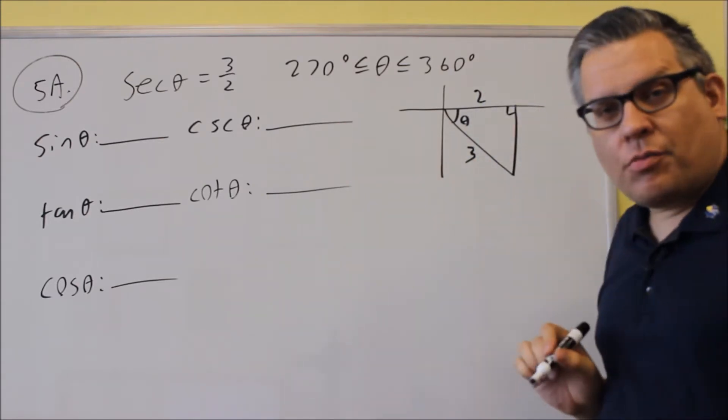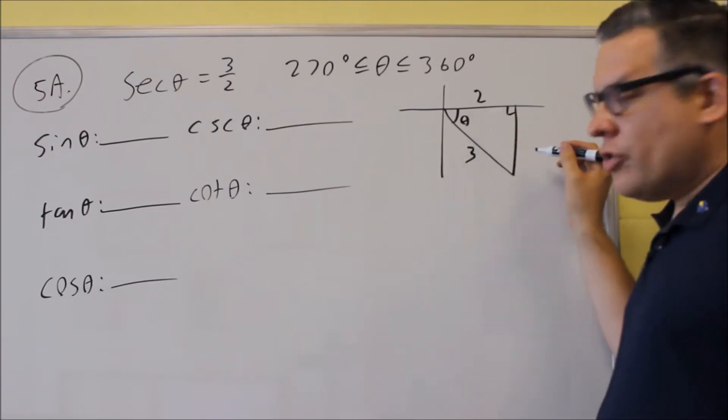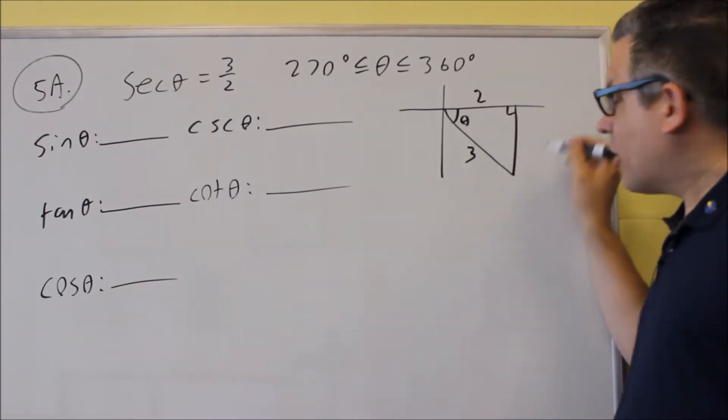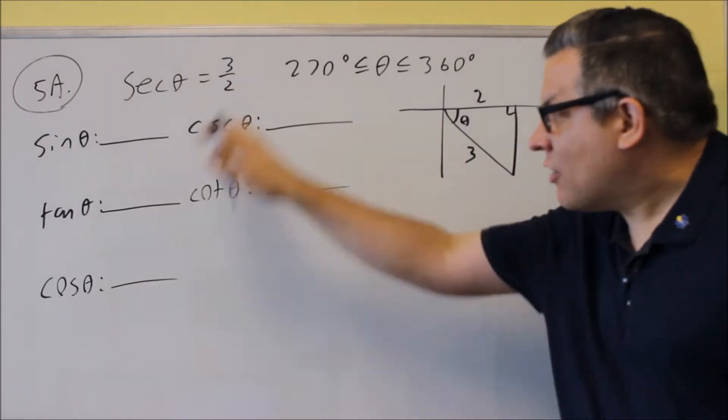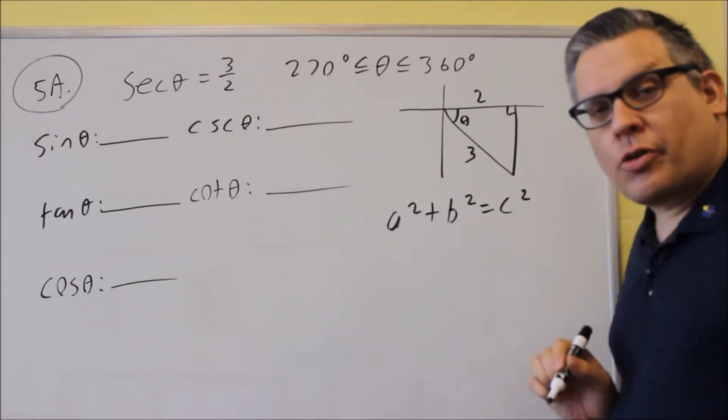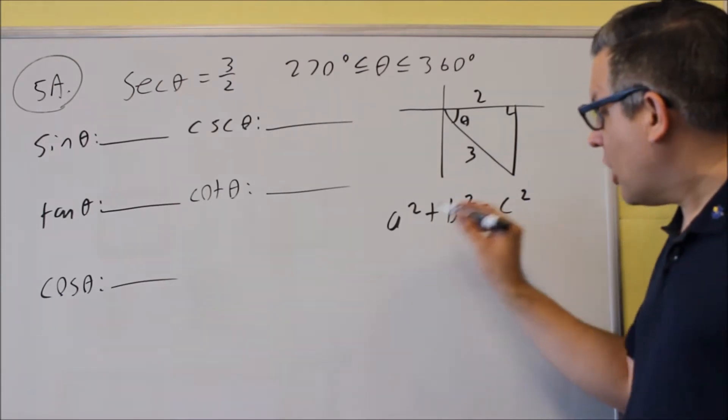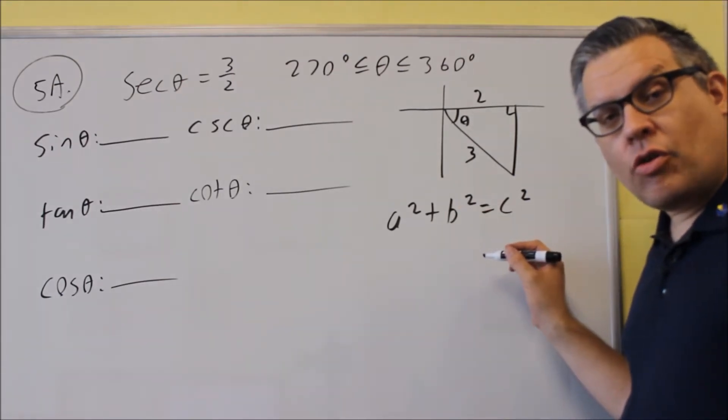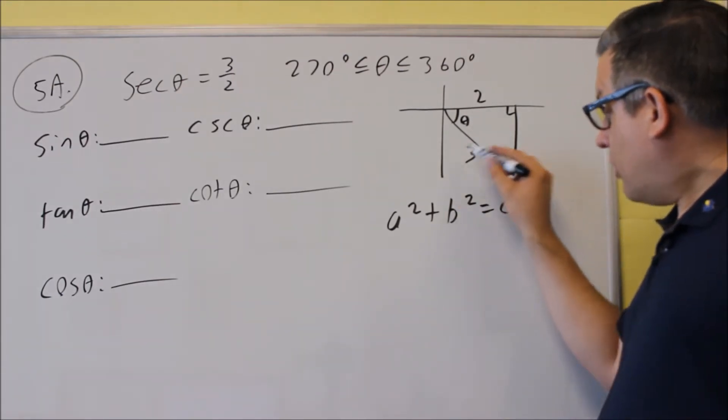Okay? This is our right triangle. So we're going to use the Pythagorean theorem to figure out the missing side, and then we can use that to fill in everything else. Pythagorean theorem is this, a squared plus b squared equals c squared. Be careful when you're labeling your triangle.